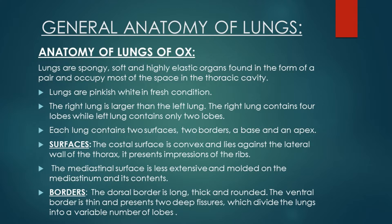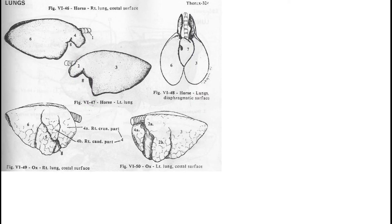I am first discussing the anatomy of lungs of ox. Lungs are spongy, soft, and highly elastic organs and are found in the form of pairs. They occupy most of the space in the thoracic cavity. Lungs are pinkish white in fresh condition. The right lung is larger than the left lung. The right lung contains four lobes while the left lung contains only two lobes in case of ox.